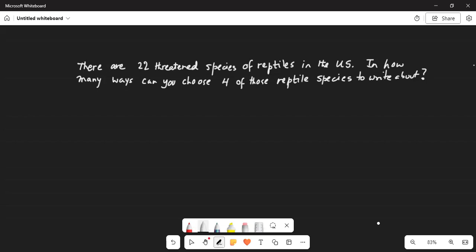There are 22 threatened species of reptiles in the US. In how many ways can you choose four of these reptile species to write about?